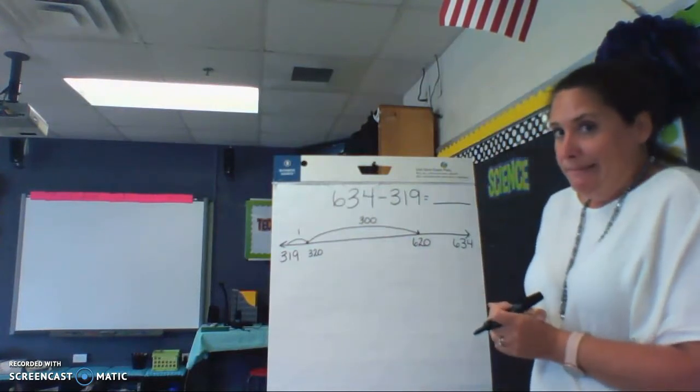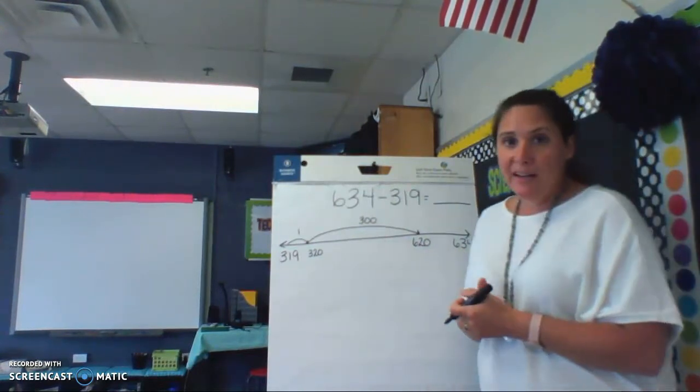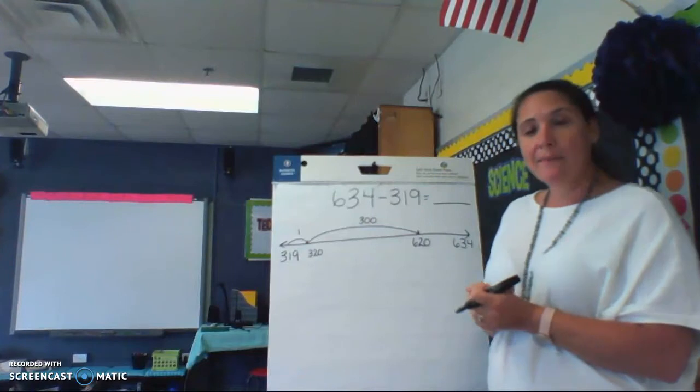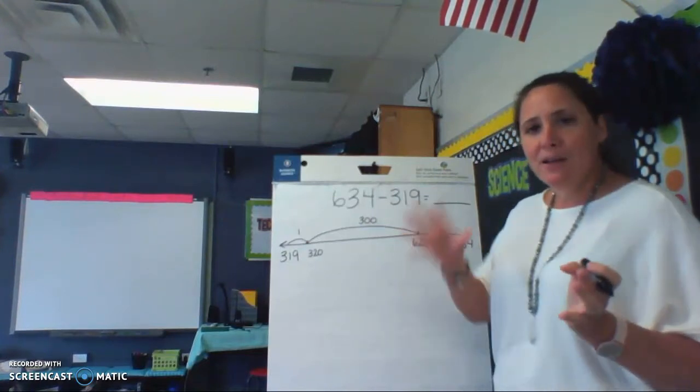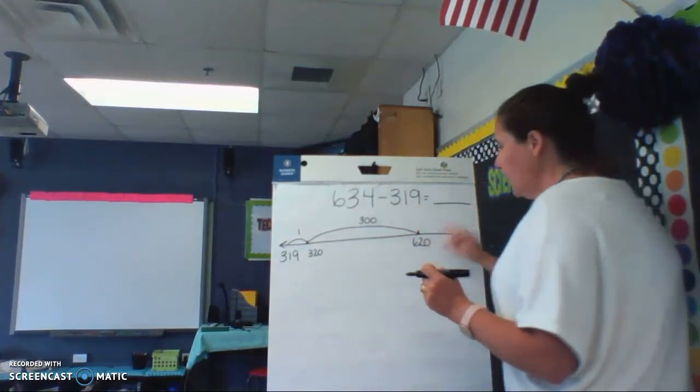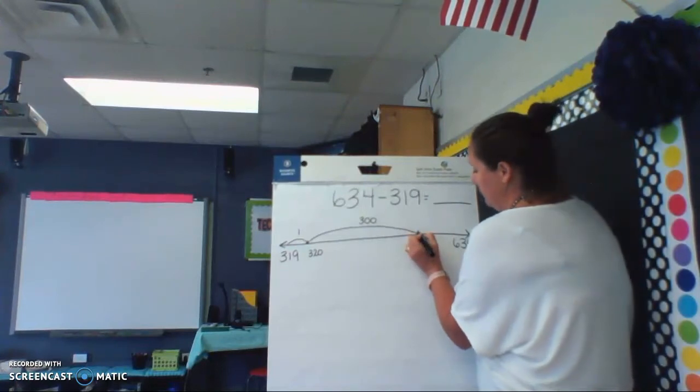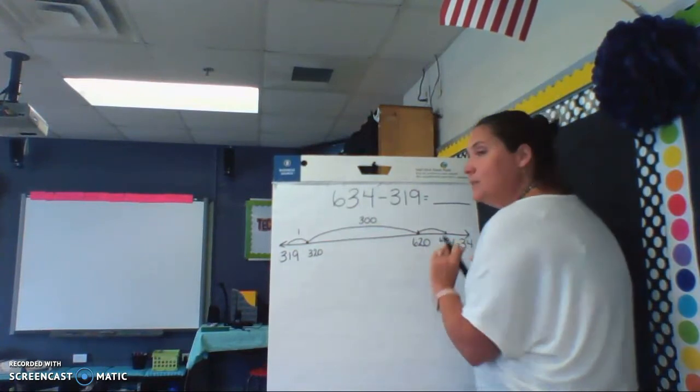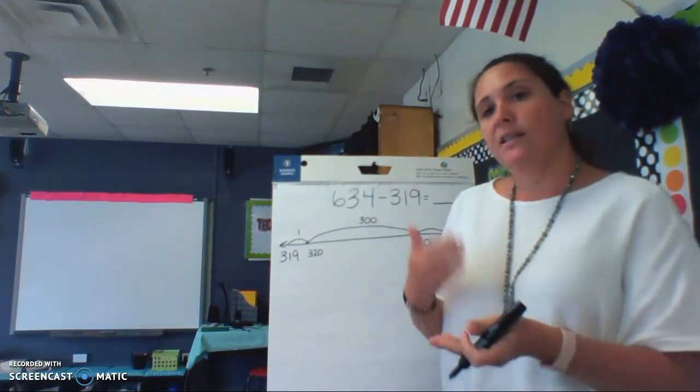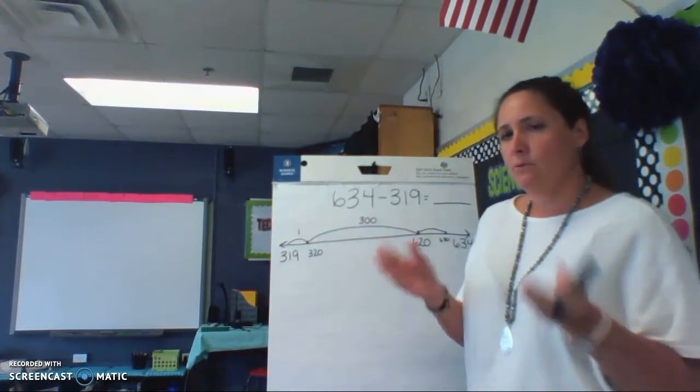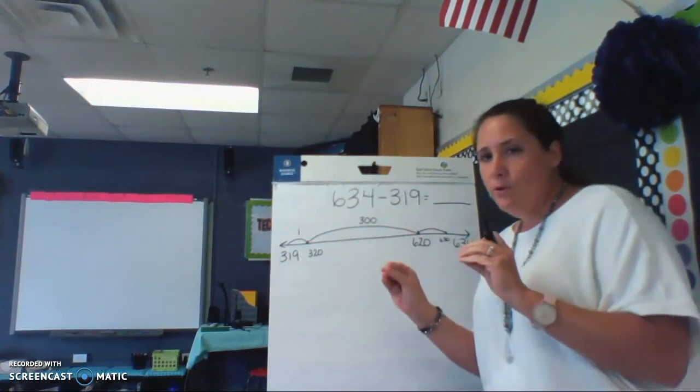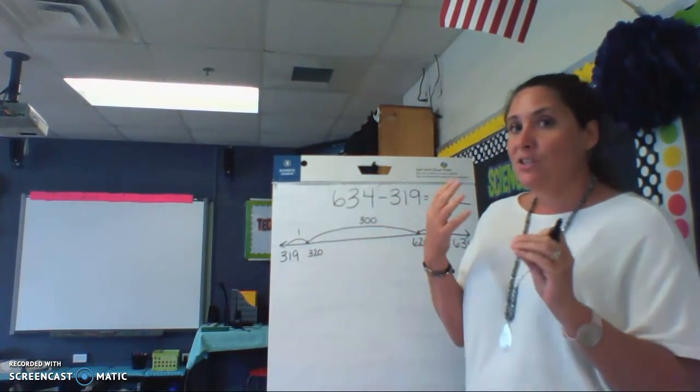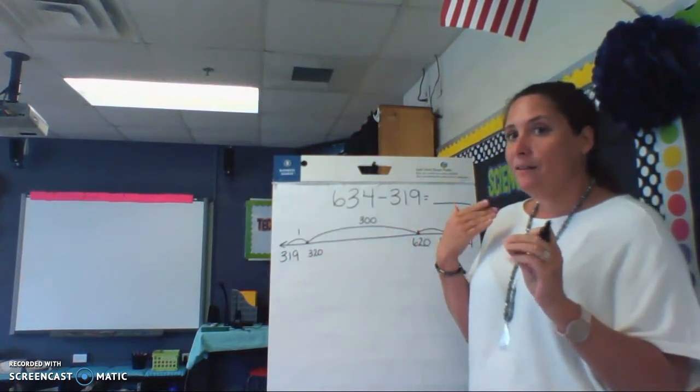Well, not there yet, I've still got to go 634. So I'm going to keep with my friendly numbers, numbers that end in zero. So I'm going to go from 620 to 630. How many miles does it take us to get from 620 to 630? Think about it. So 20, 30, that is a group of 10.